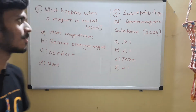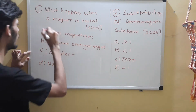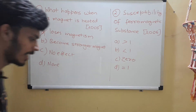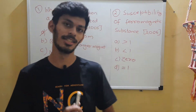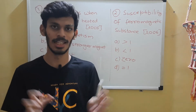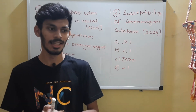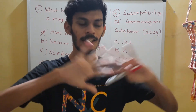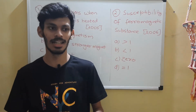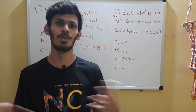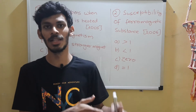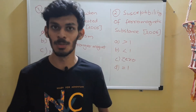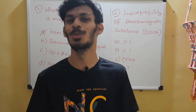It will lose its magnetism — option A is the correct choice. When a magnet is heated, the domains inside align in a random fashion, cancelling the magnetic moment of each other. They align randomly on increasing the temperature, so as to cancel the magnetic moment of each other — no magnetic moment, no magnetism.